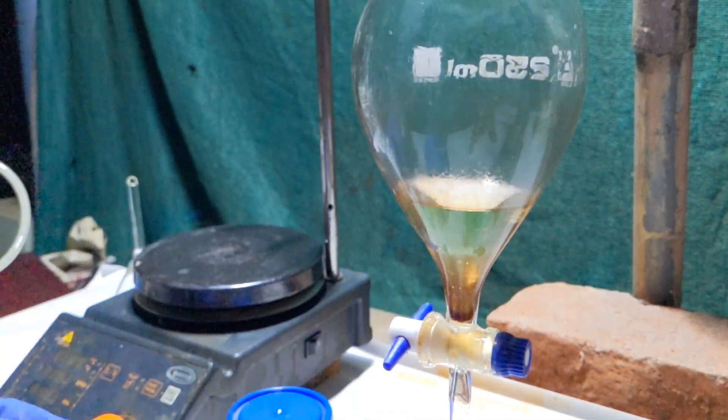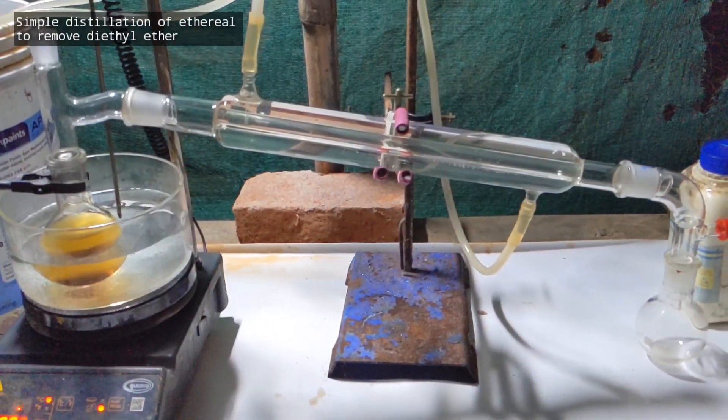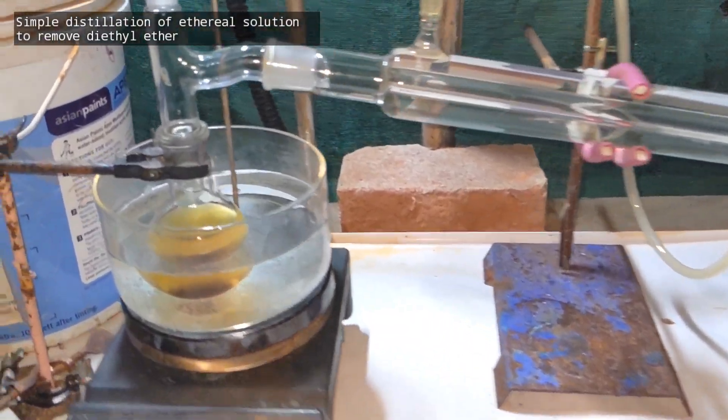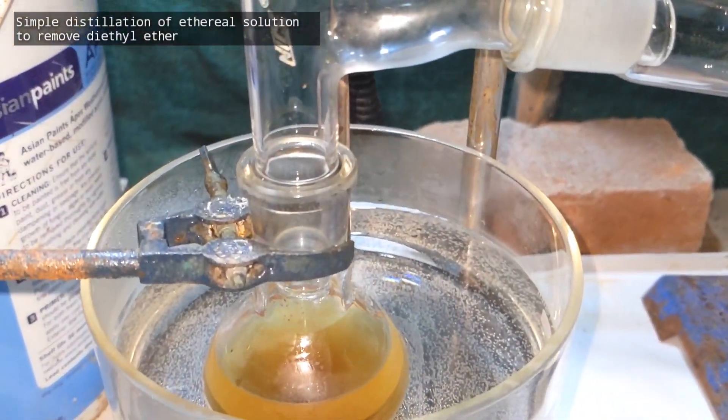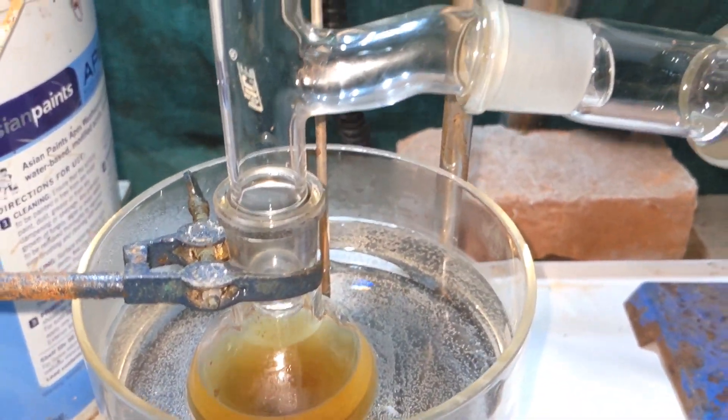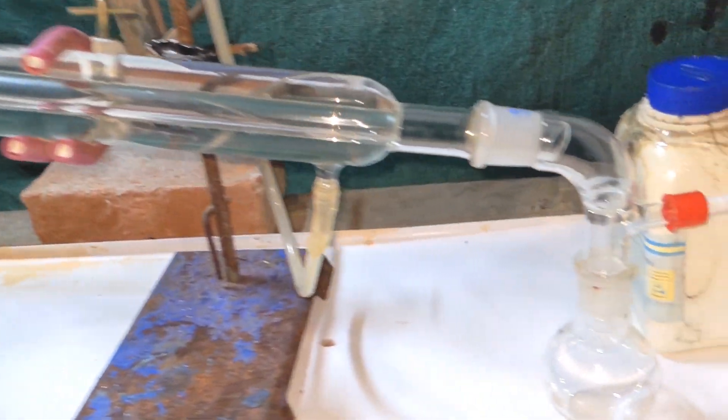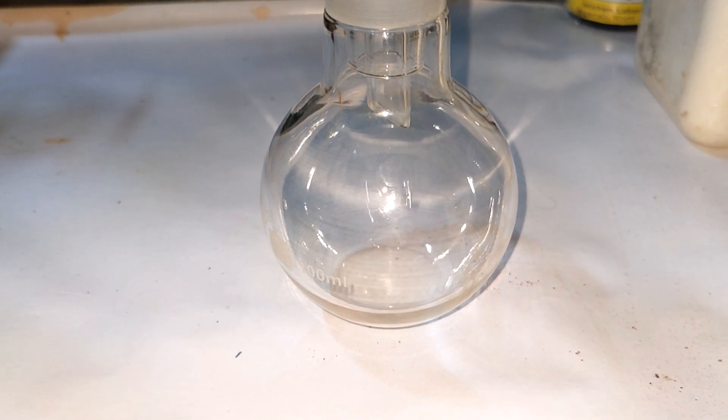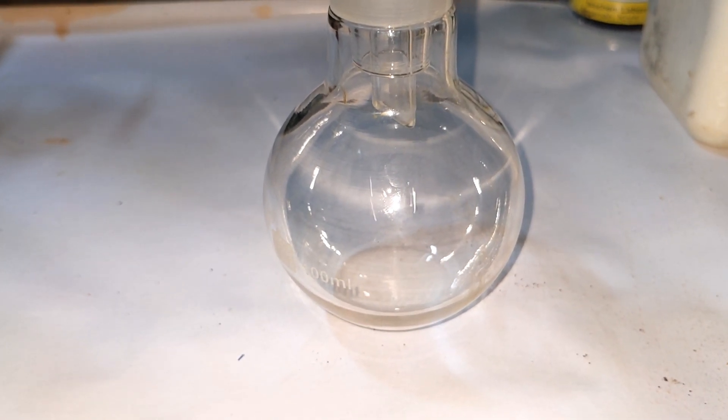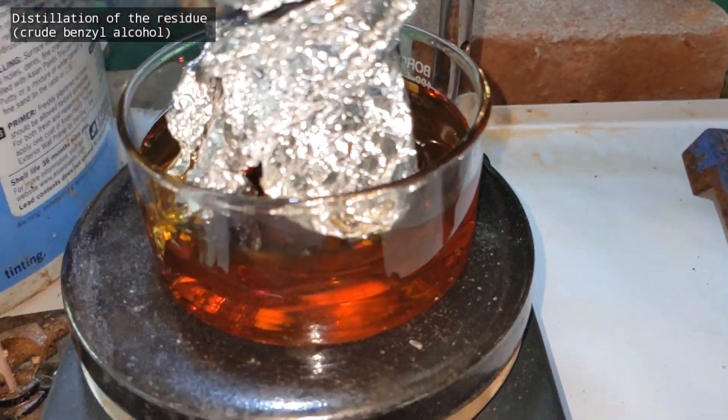After 5 cycles of extraction using ether, the ethereal part was taken in a round bottom flask and all the ether was removed using distillation. This way you can recycle the solvent diethyl ether. It has a very low boiling point and for uniform application of that low heat, I used a hot water bath.